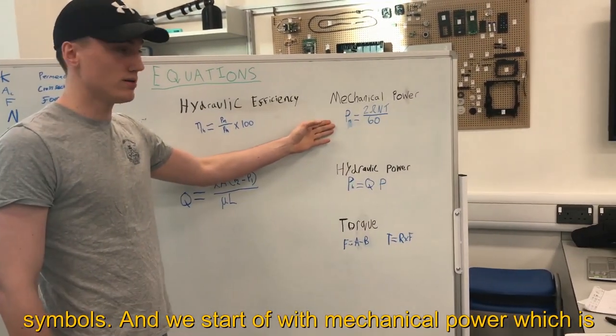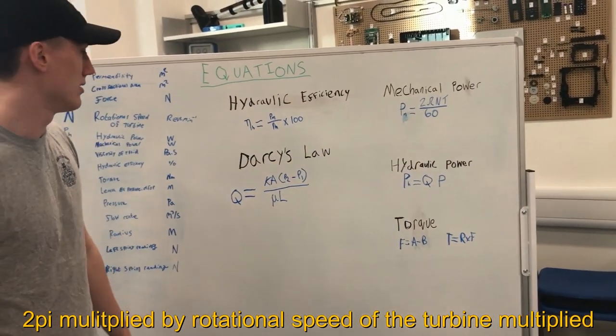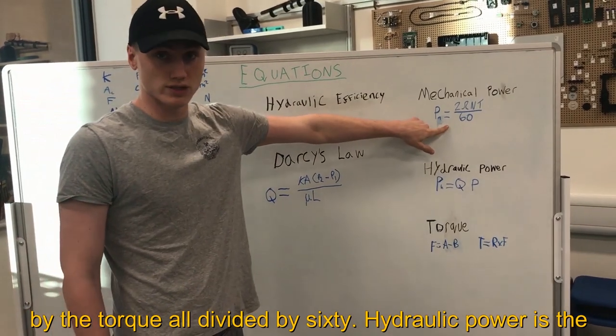We'll start off with mechanical power which is 2π multiplied by the rotational speed of the turbine multiplied by the torque multiplied by 60.